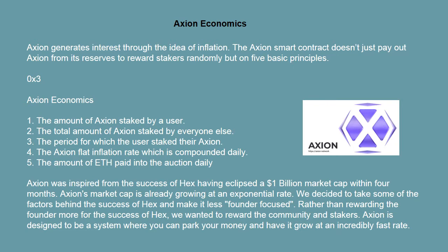The 5 principles are: 1. The amount of Axion staked by a user. 2. The total amount of Axion staked by everyone else. 3. The period for which the user staked their Axion. 4. The Axion flat inflation rate, which is compounded daily. 5. The amount of ETH paid into the auction daily.